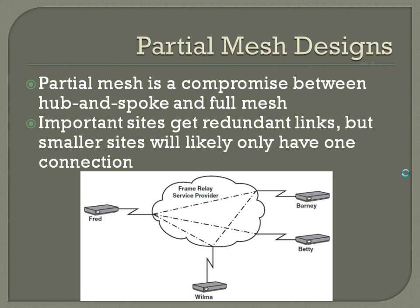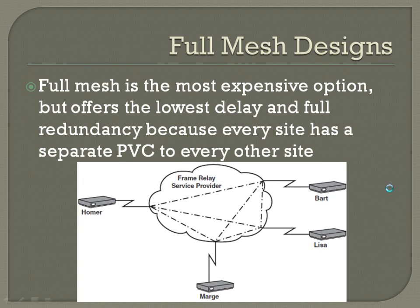Partial mesh is a compromise between hub and spoke and full mesh. Your more important sites get redundant links, but smaller one-user sites only have a single connection. For example, Fred as the main headquarters has a PVC to every location. Wilma and Barney have redundancy between each other and to the main hub, but not full connections to all sites. Betty, perhaps a smaller one-user site, only has a single connection to the main hub. Going full mesh, all sites have interconnections to all others — it's the most expensive option but offers the lowest delay and full redundancy, because any site connecting to another only has the delay of that single PVC.